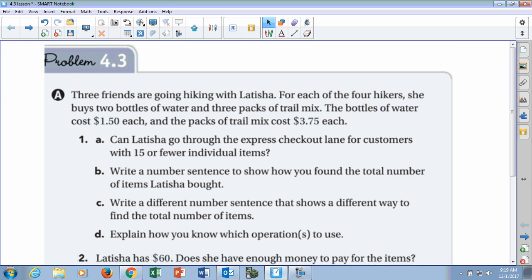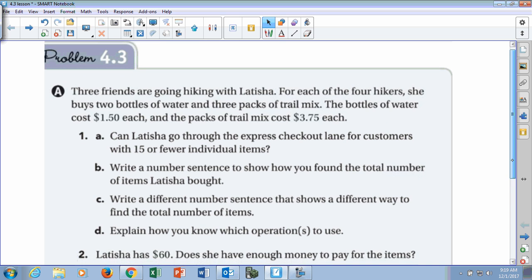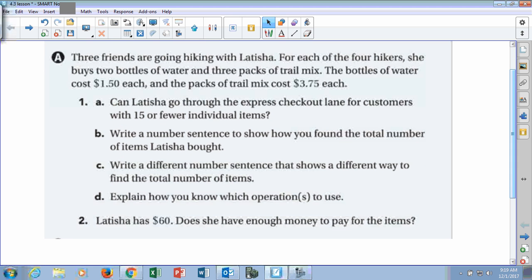The first task you're going to do as a team is part A. Part A says three friends are going hiking with Latisha. For each of the four hikers, she buys two bottles of water and three packs of trail mix. The bottles of water cost $1.50 each, and the packs of trail mix cost $3.75 each.